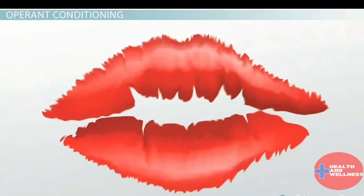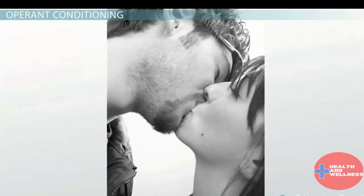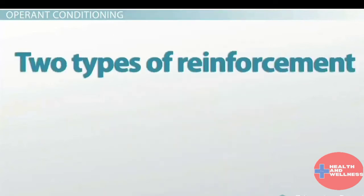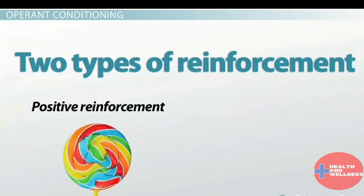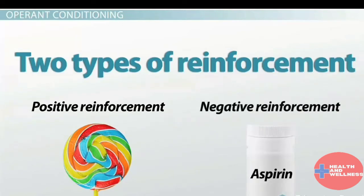Let's go back to the example of the kiss. What would happen if the person put their arms around you and kissed you back enthusiastically? This would be an example of reinforcement and would probably increase the likelihood that you would seek another kiss. There are two types of reinforcement. Positive reinforcement refers to the addition of something positive — examples include offering praise or a treat when a desired behavior is displayed. Negative reinforcement occurs when something undesirable is removed whenever a behavior is displayed, such as taking aspirin to get rid of a headache or doing the dishes to avoid a fight with your roommate.